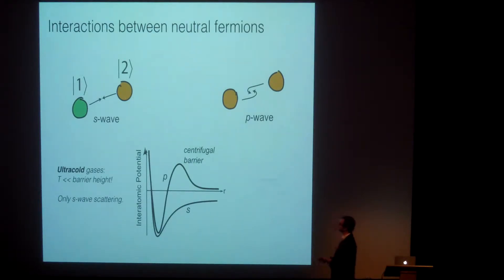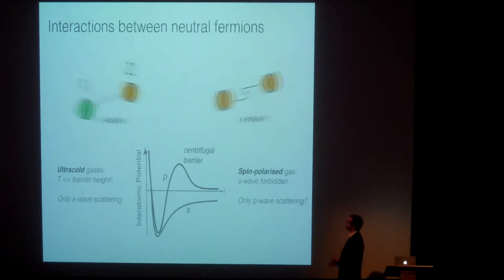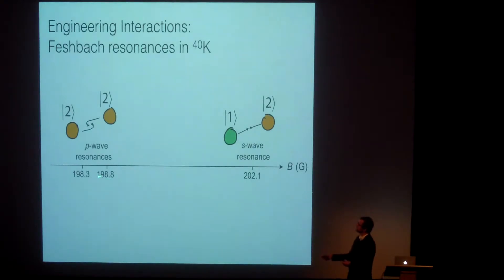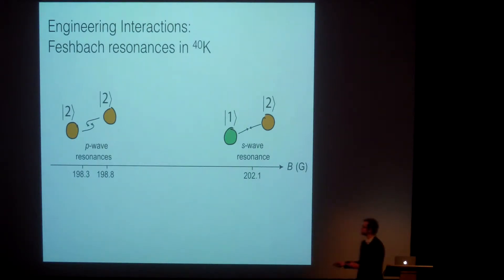On the other hand, you can make a different argument, which is what if I spin polarized my gas? Now S-wave interactions are forbidden by exchange symmetry. So you might say, well, then we must have only P-wave scattering, or maybe it's just a non-interacting gas. In fact, we can choose between these scenarios because in the presence of a magnetic field for correctly chosen states, we can either choose to resonantly enhance the P-waves or resonantly enhance the S-waves. We do this with a mechanism called a Feshbach resonance.